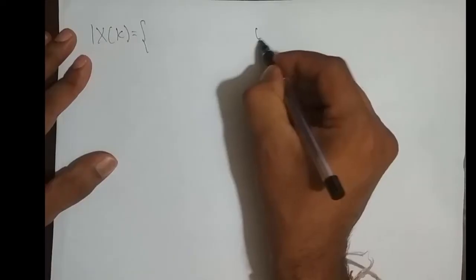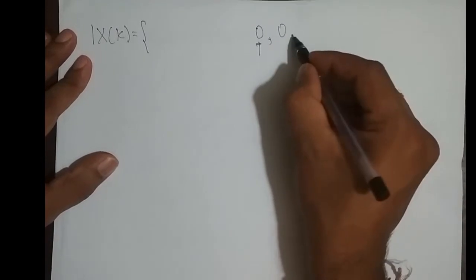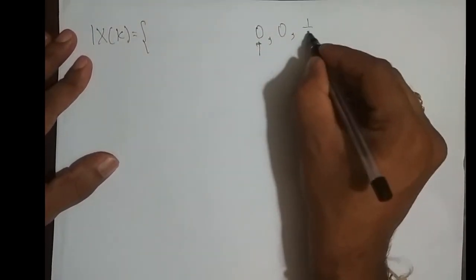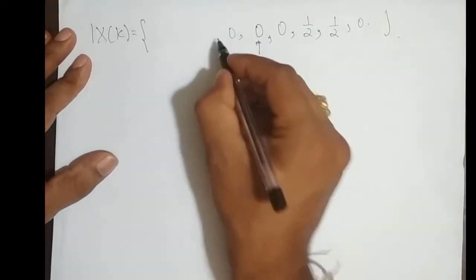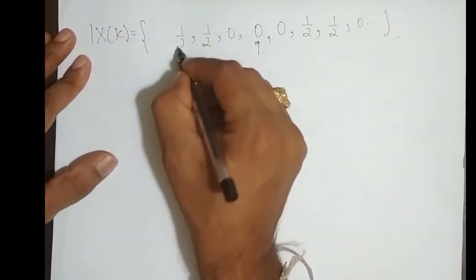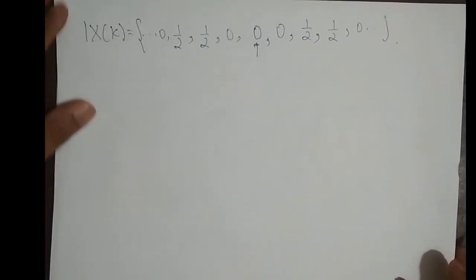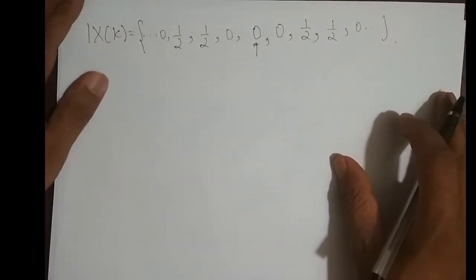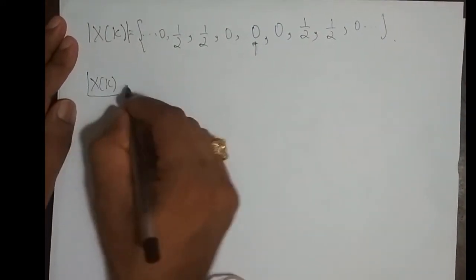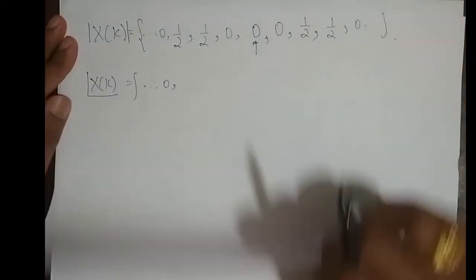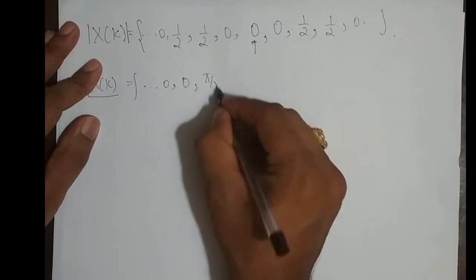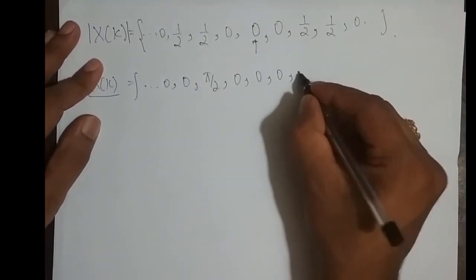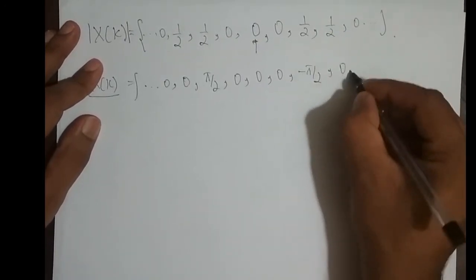We now plot the magnitude and phase spectra. The magnitude |x[k]|: at k = 0, 1 it is 0; at k = ±2, |1/(2j)| = 1/2; at k = ±3, |1/2| = 1/2. Magnitude is symmetric. For the phase angle: at k = 2, angle of 1/(2j) is −π/2; at k = −2, angle of −1/(2j) is π/2; at k = ±3, the coefficients are real so the phase is 0.